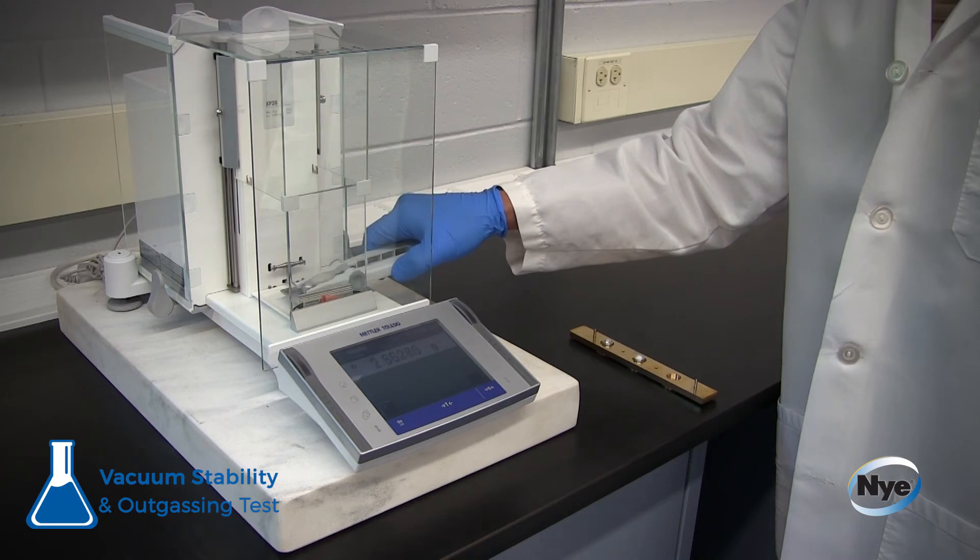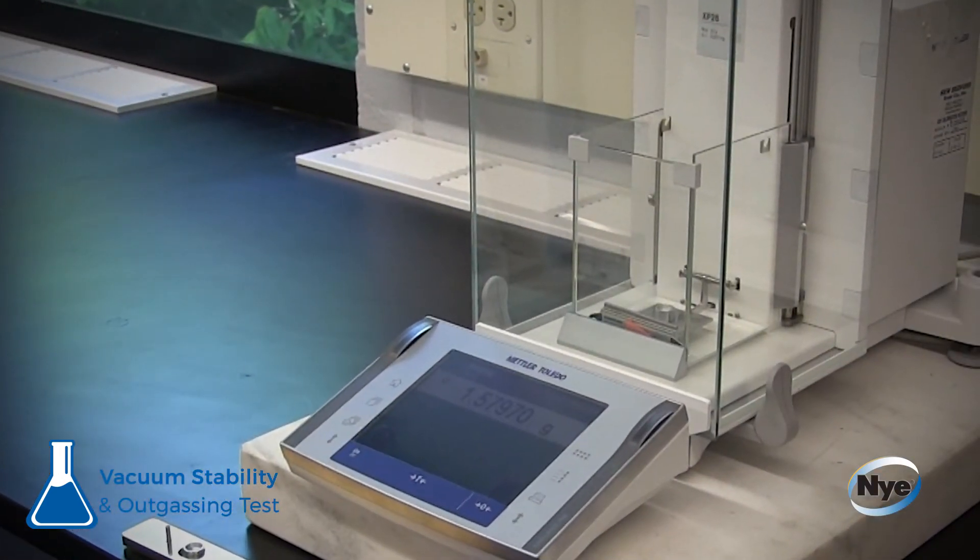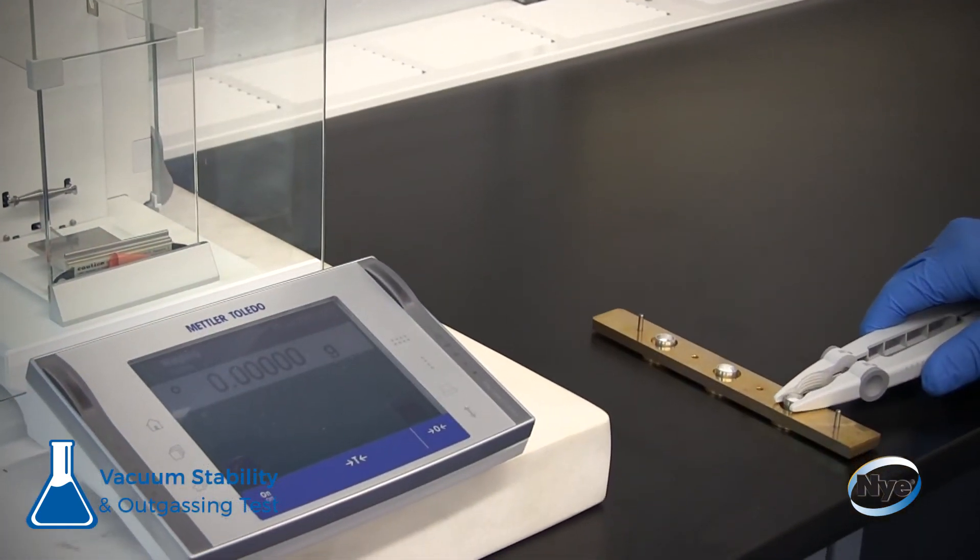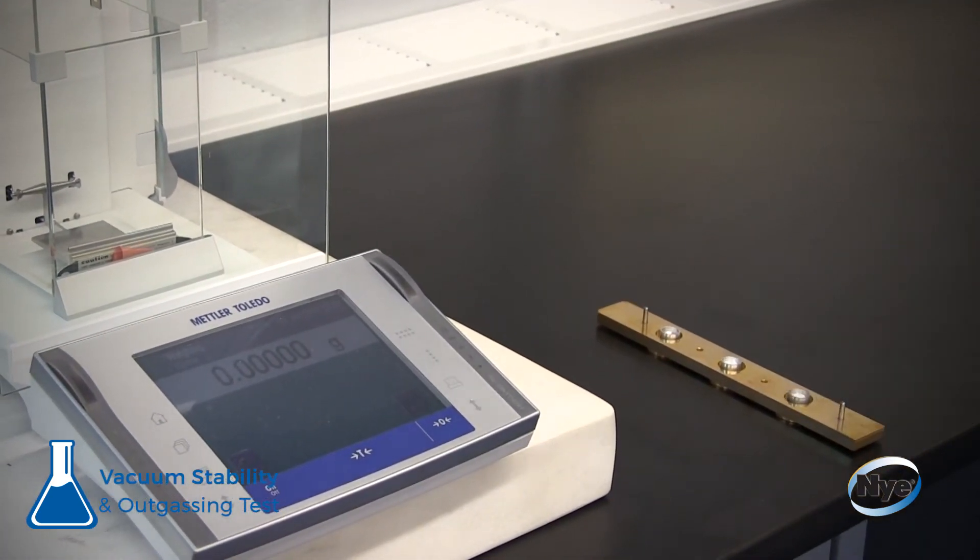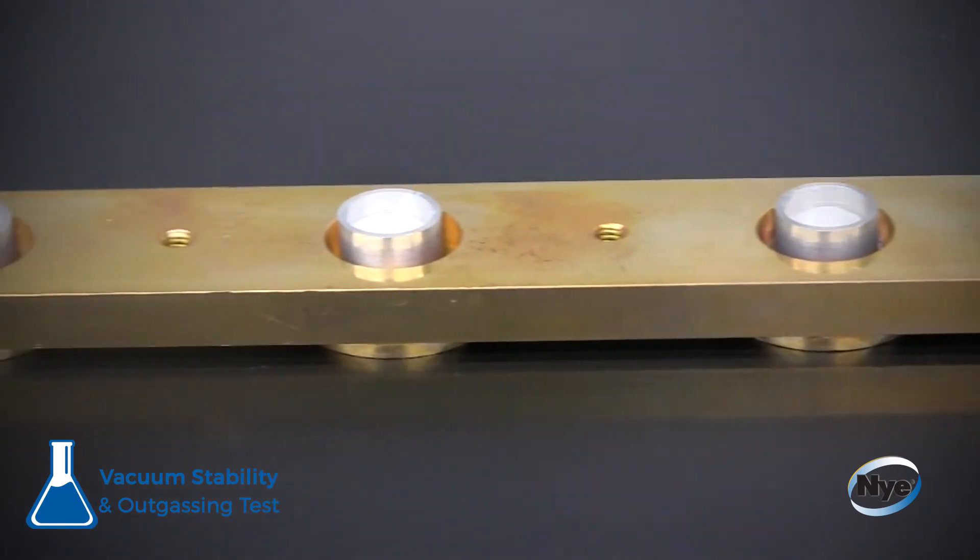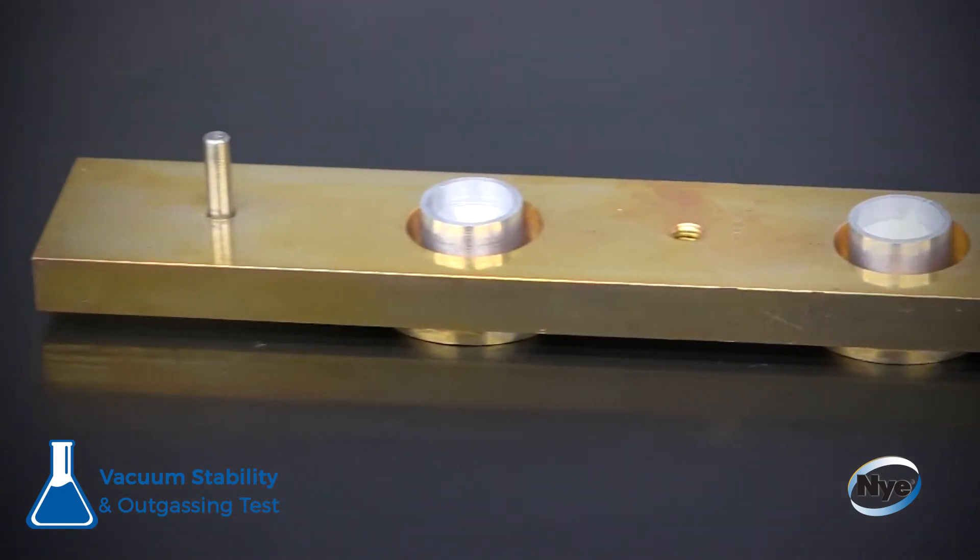From these results outgassed and the sample mass determined prior to the vacuum exposure, the percentage TML and percentage CVCM are obtained. Normally, the reported values are an average of the percentages obtained from three samples of the same material.